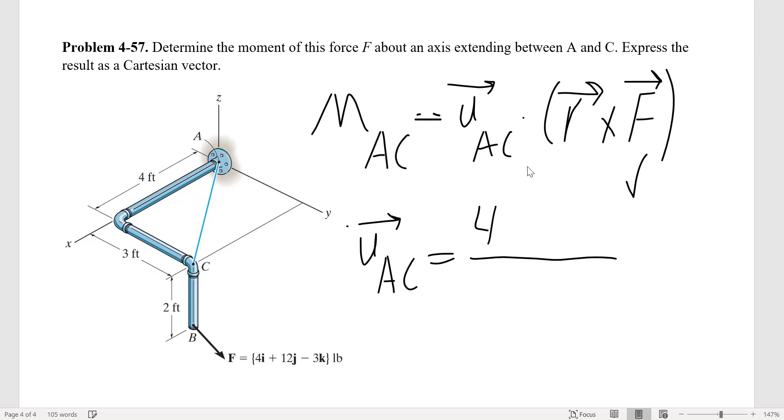The position vector would be 4i plus 3j, the magnitude is 5, so UAC would be 0.8i plus 0.6j. So now we have the unit vector.